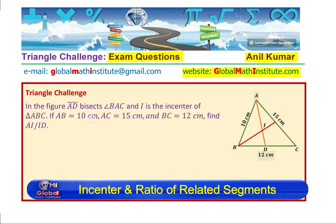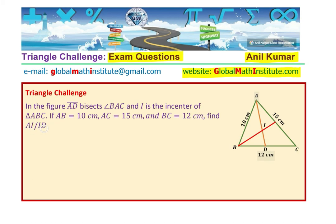If AB equals 10 centimeters, AC is 15 centimeters, and BC is 12 centimeters, find the ratio AI over ID.